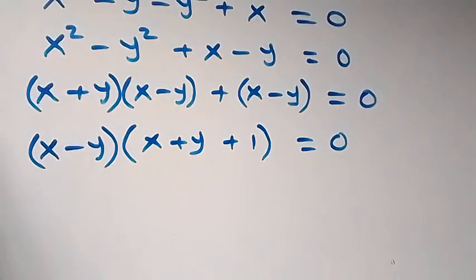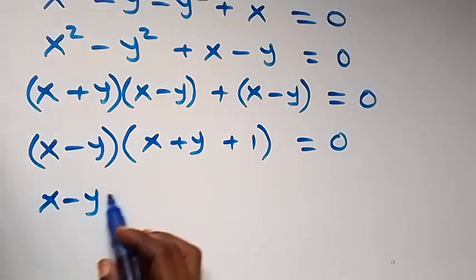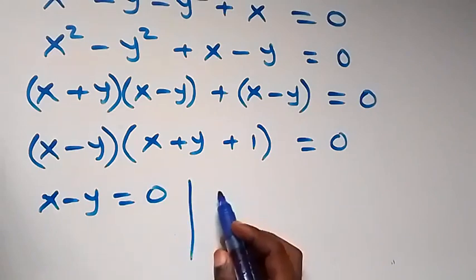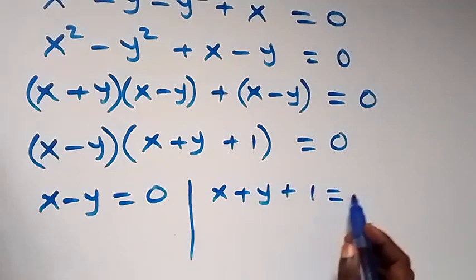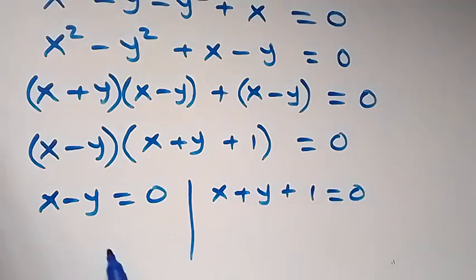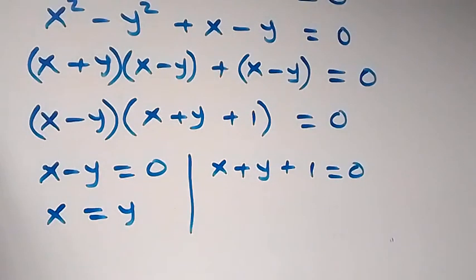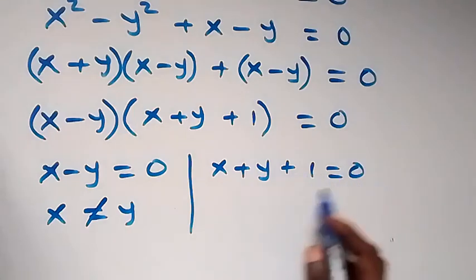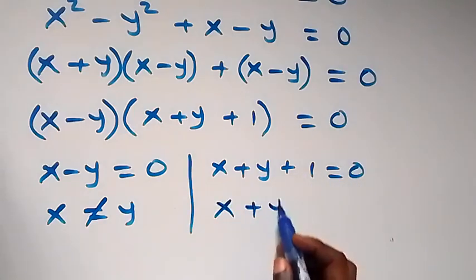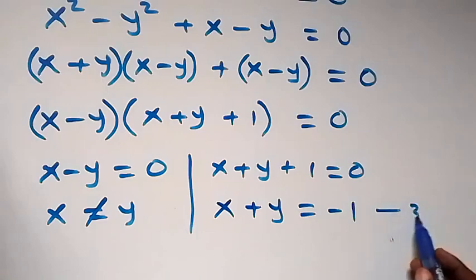From here we have two cases: x minus y equals zero, or x plus y plus one equals zero. From the first case, x equals y — but since we stated that x is not equal to y, this case is rejected. From the second case, taking one to the other side, we have x plus y equals minus one. Label this as equation three.